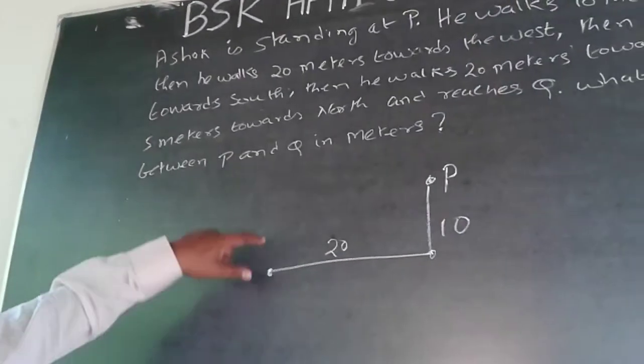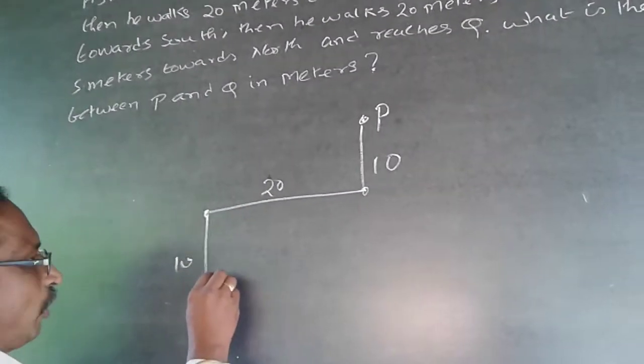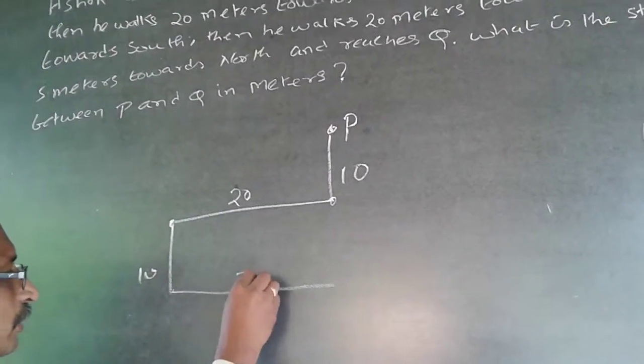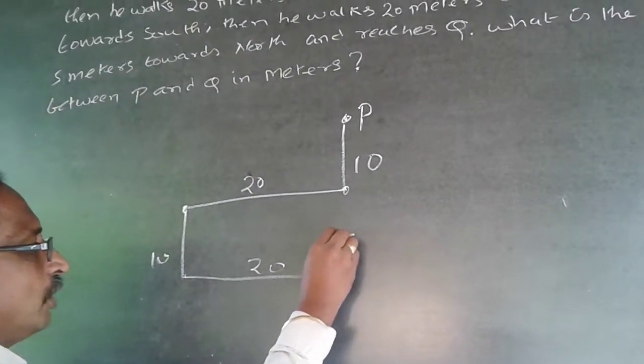From here, he is walking 10 meters south, so it will be 10 down here. And then again from here, he is walking 20 meters east, he is going towards right, it will be like this, 20. And from here, he is going 5 meters north and reaches Q. So, this is Q.